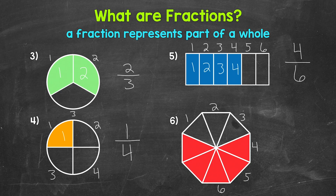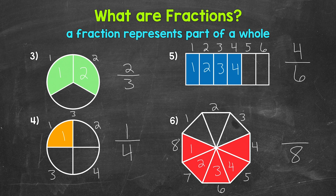For number six, how many total equal parts has the whole been divided into? One, two, three, four, five, six, seven, eight. So eight is our denominator. Now we need how many equal parts have been shaded — one, two, three, four, five. So that's our numerator, and we get five over eight. We say this five eighths. Five out of eight parts are shaded.